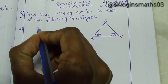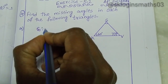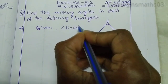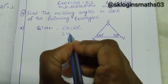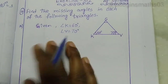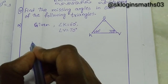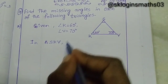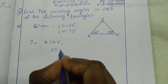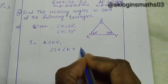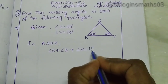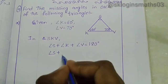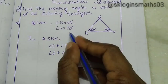In triangle SKV, angle K is equal to 60 degrees and angle V is equal to 70 degrees. The sum of the three angles — angle S plus angle K plus angle V — is equal to 180 degrees. So angle S plus 60 degrees plus 70 degrees equals 180 degrees.